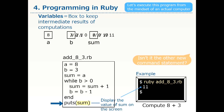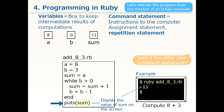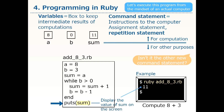You might have a question at this point: isn't there another new command statement? Yes, it is true. We have been studying commands for computations, but command statements for interacting with people are also necessary. Among them are input and output statements. The 'puts' command has the name of a variable written in the parentheses, and it displays the value of that variable on the screen. By executing this command, we get 11 on the screen.